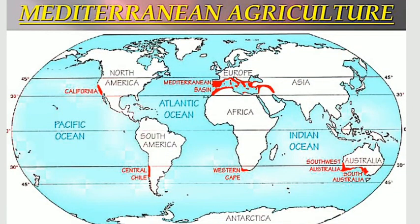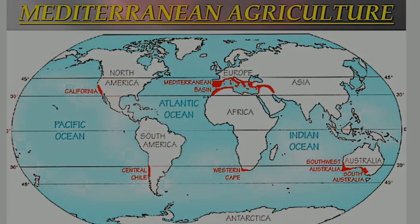Welcome back everyone. Today we will continue with Mediterranean agriculture, which is in the 12th class primary activities chapter. In the last lecture we had discussed about agriculture-related activities, plantation, etc. So today we will continue with Mediterranean.